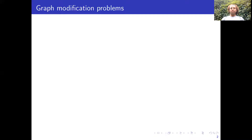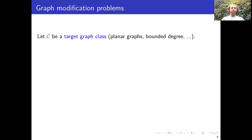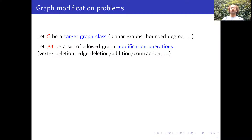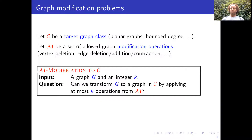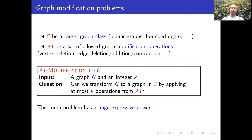Our work places itself in the huge area of graph modification problems. The most general setting is the following: take your favorite graph class C, and let M be a set of allowed graph modification operations — vertex deletion, edge deletion, edge contraction, whatever. The question is whether G can be transformed to a graph in the target class C by applying at most k operations from the allowed set M.